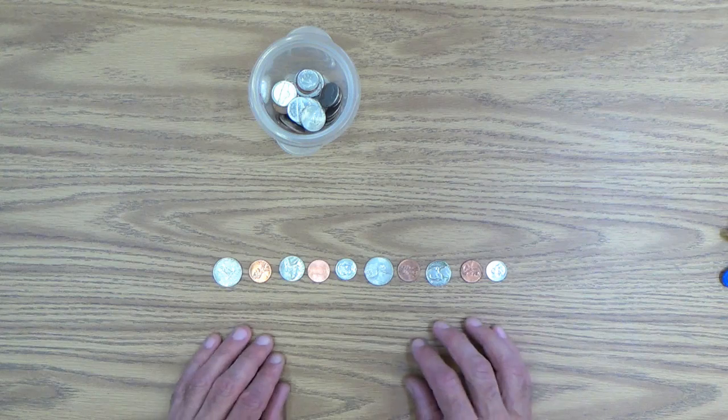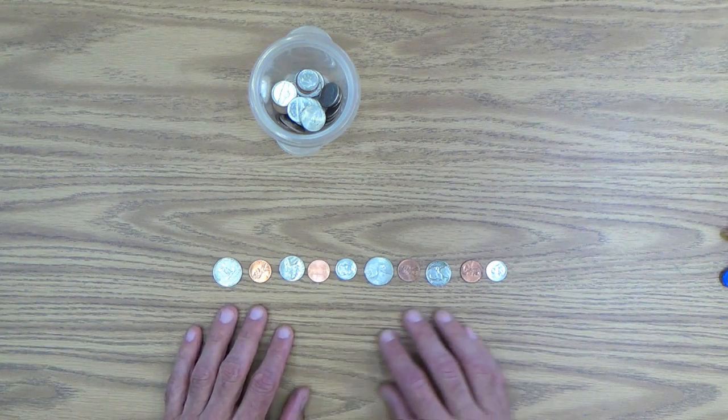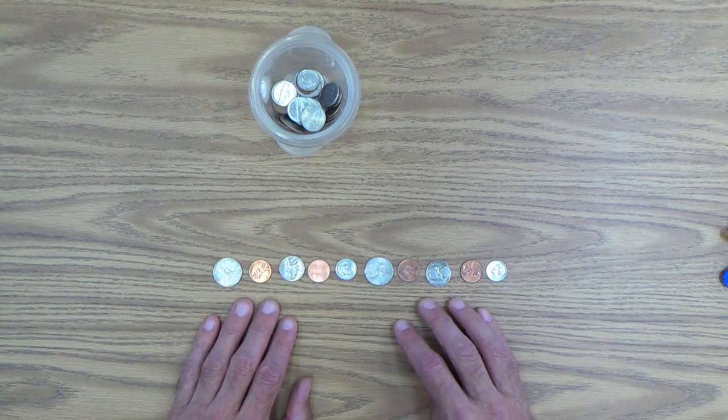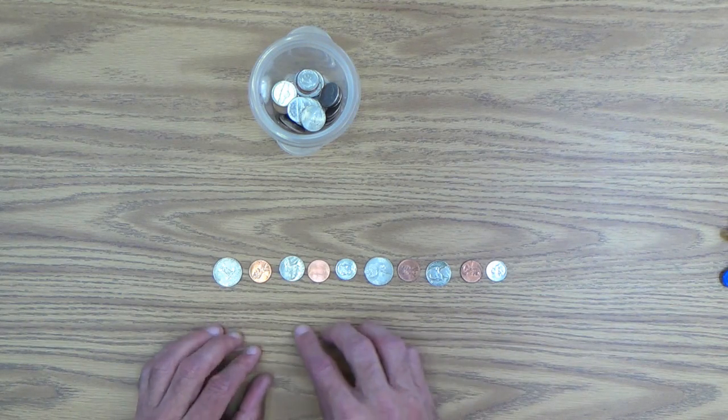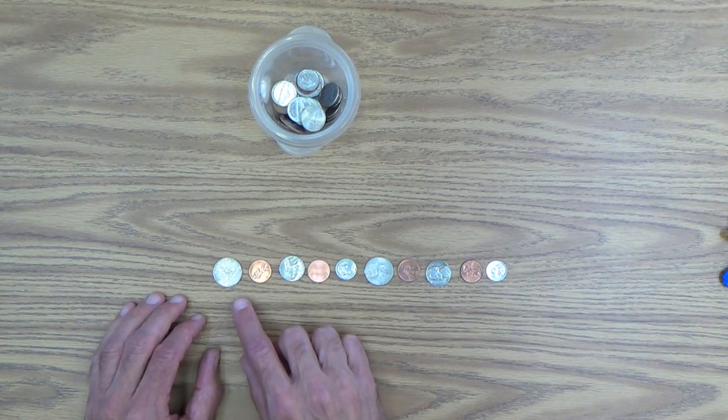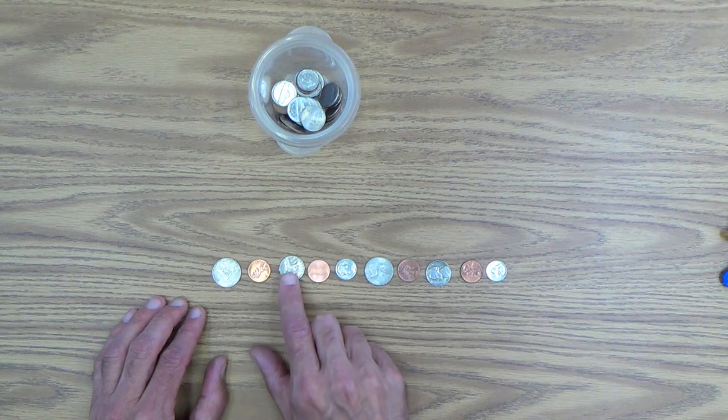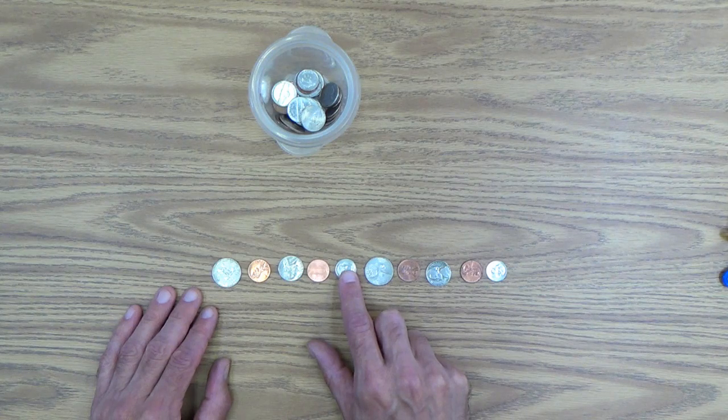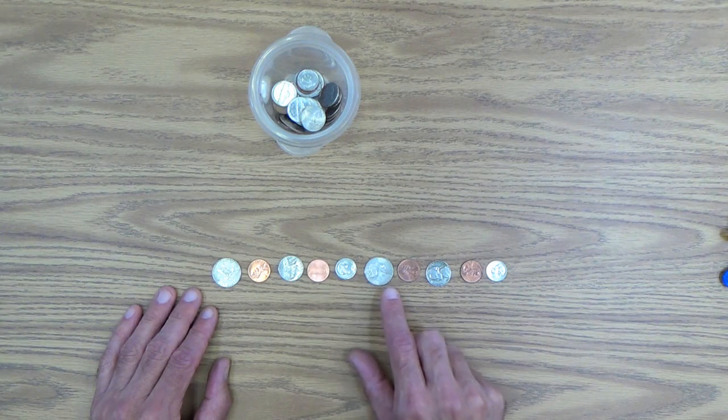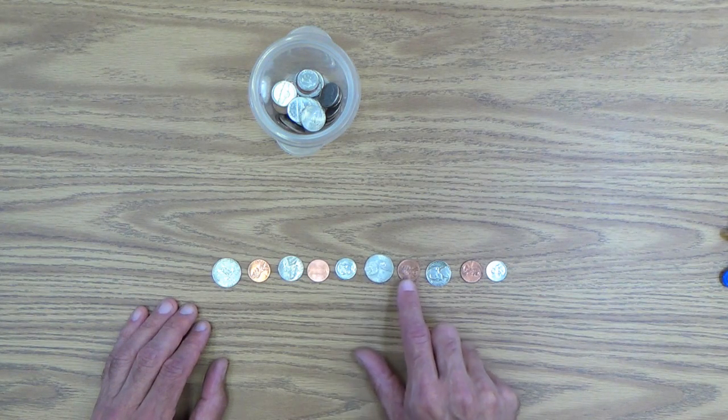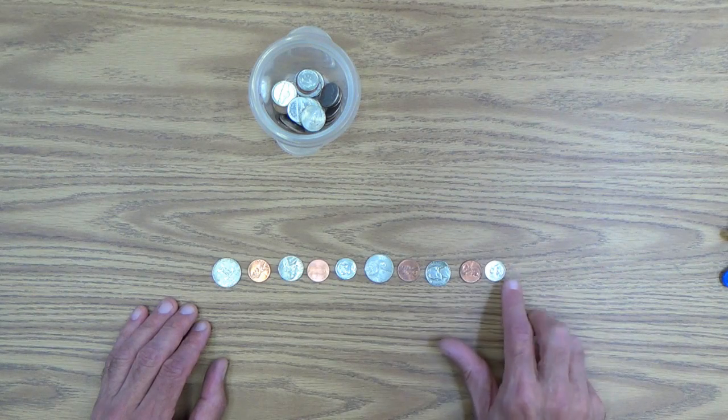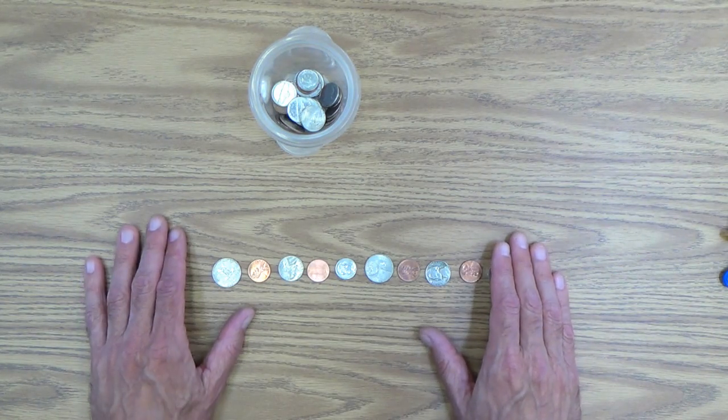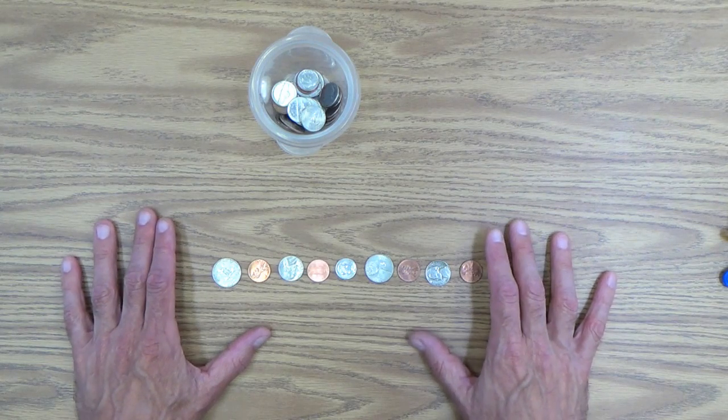What you want to do when they are extending these patterns is make sure your child is using very precise language. For example, this one, she's pointing and saying quarter penny, nickel, penny, dime. And then she's saying, 'Then the pattern repeats itself. Quarter penny, nickel, penny, dime.' So make sure the language is very precise and not sloppy when you're doing this.